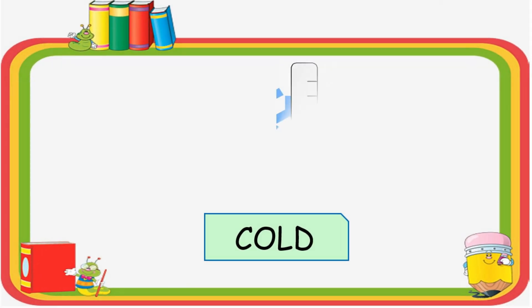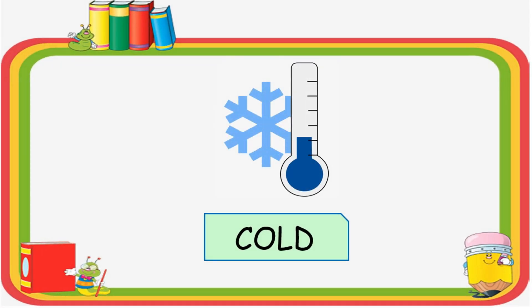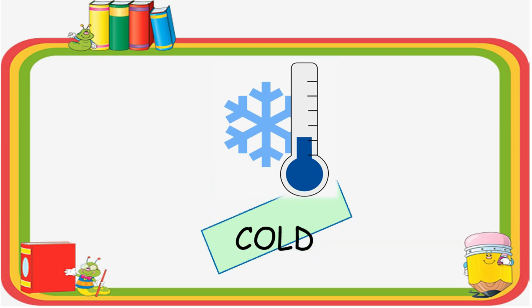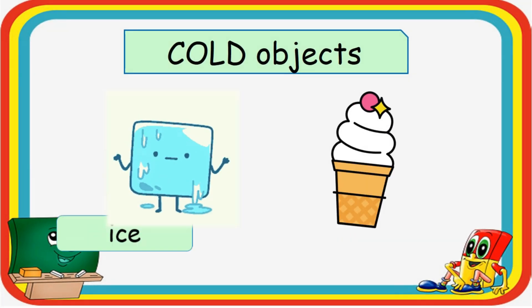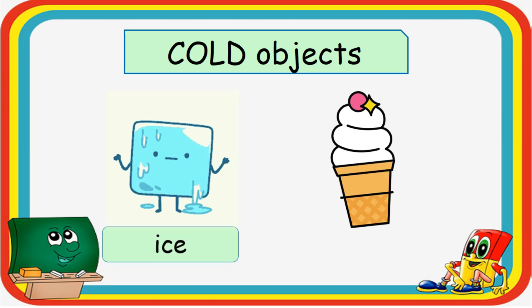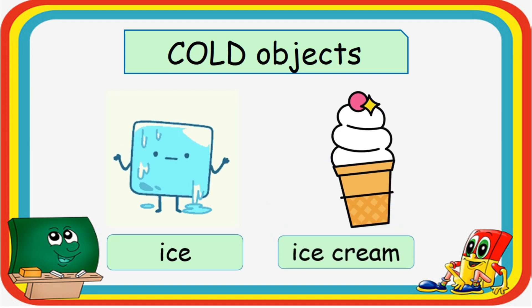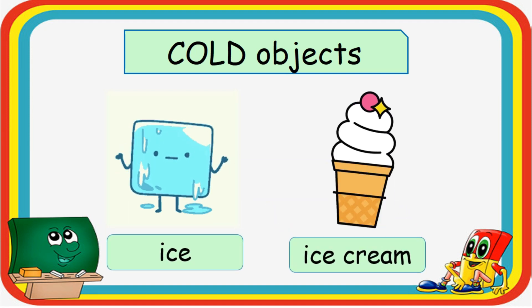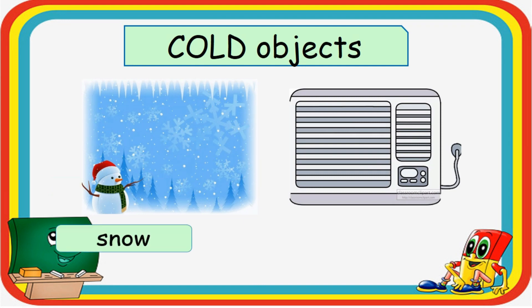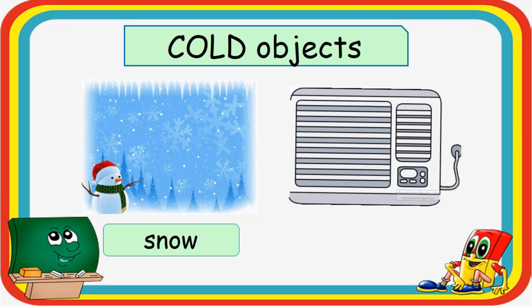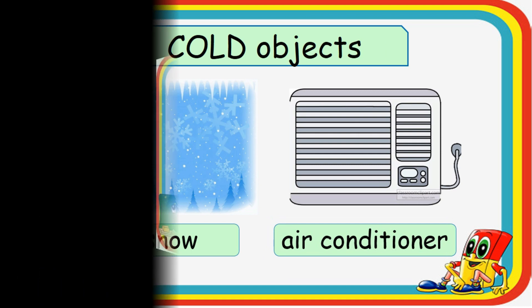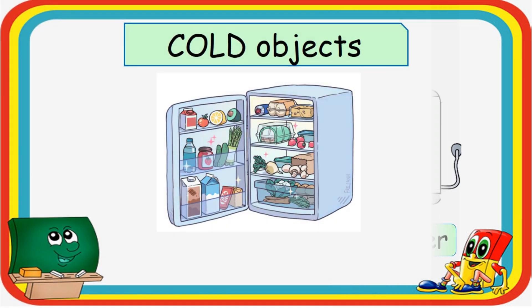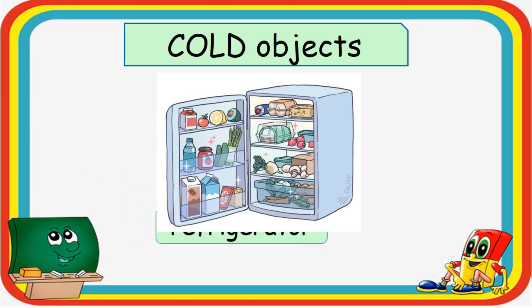Here are the examples of cold objects: ice, ice cream, snow, air conditioner, and refrigerator.